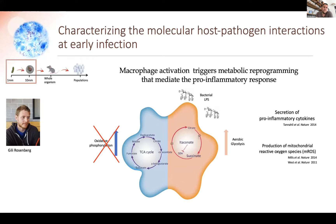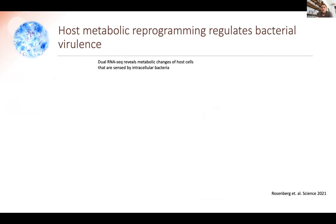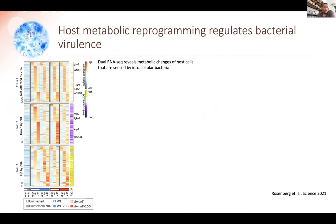This metabolic change entails accumulation of metabolites within macrophages that mediate the secretion of pro-inflammatory cytokines, production of mitochondrial ROS, and other pro-inflammatory mechanisms. What Gili wanted to know is what happens to Salmonella within macrophages when they undergo such a huge metabolic change. You have to realize that this intracellular environment is basically what the bacteria senses as its extracellular cues.